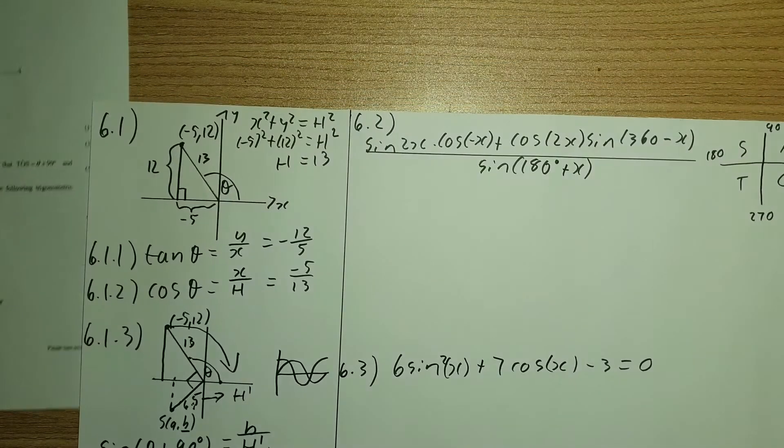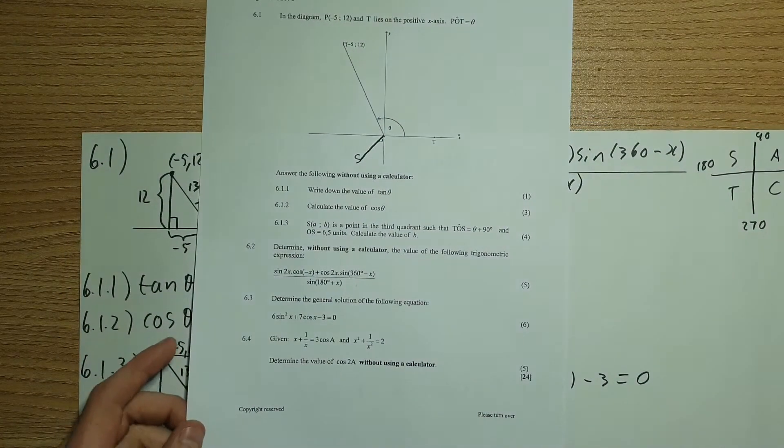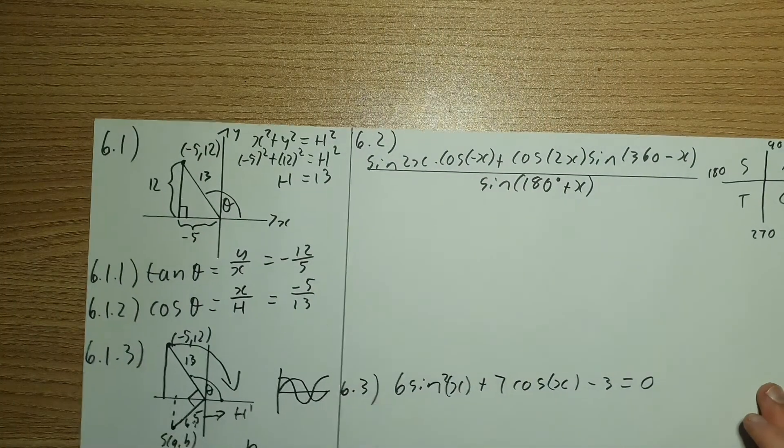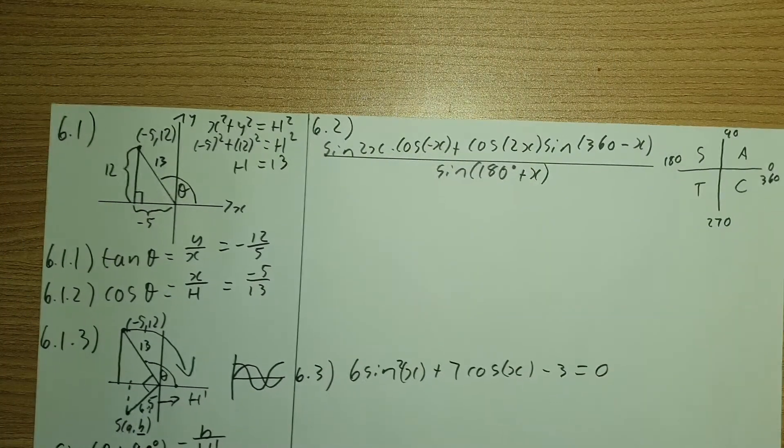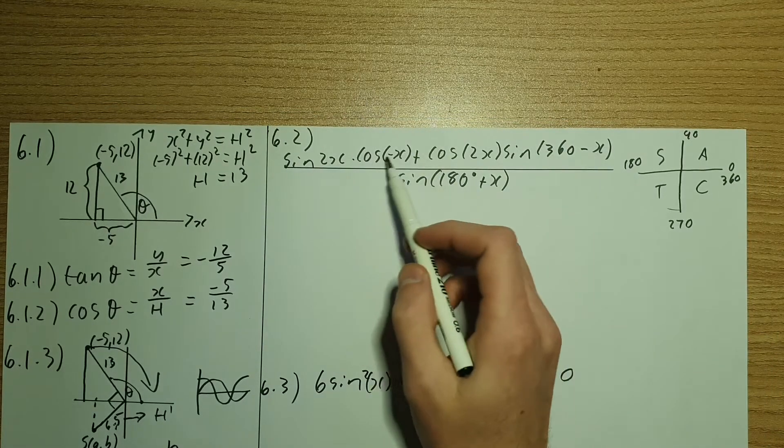So even though in this case, my B value is now negative 5 over 2, which yes, is originally half my x value, what's actually happened here is my triangle has rotated down into the third quadrant. But don't make the mistake of seeing the ratio here and just halving everything. Now 6.2 says without the use of a calculator, determine the following expression. So we need to simplify it.